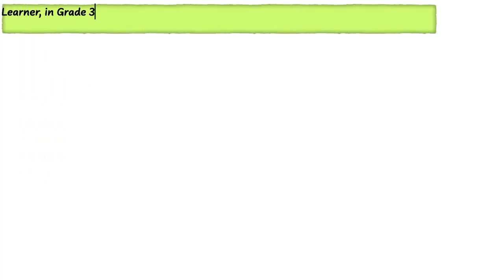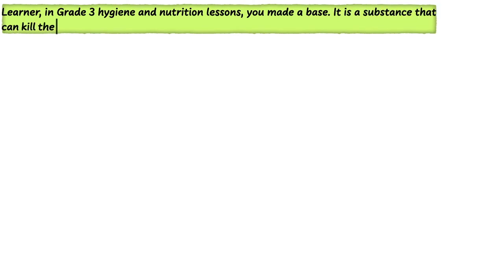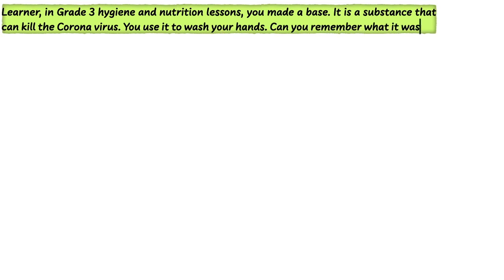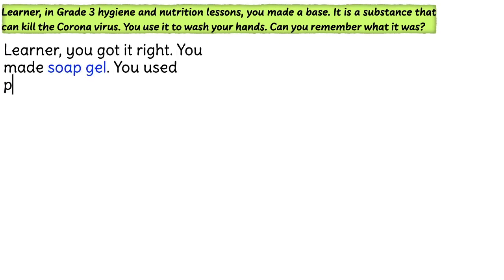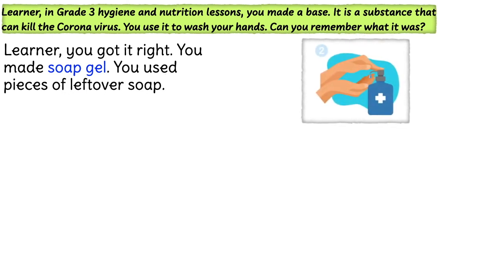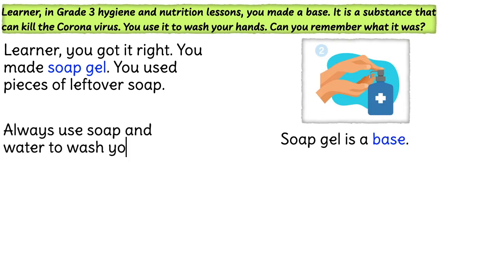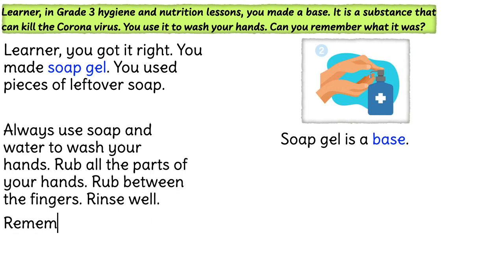Learner, in grade 3 hygiene and nutrition lessons, you made a base. It is a substance that can kill the coronavirus. You use it to wash your hands. Can you remember what it was? You got it right — you made soap gel. You used pieces of leftover soap. Soap gel is a base. Always use soap and water to wash your hands. Rub all parts of your hands, rub between the fingers, rinse well. Remember to wash for 20 to 30 seconds.